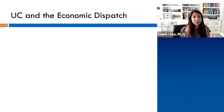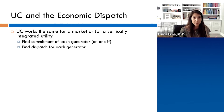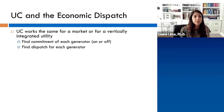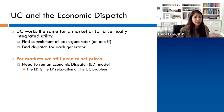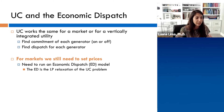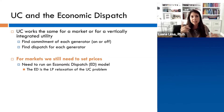Alongside unit commitment, we have what we call economic dispatch. The unit commitment works the same for a market or a vertically integrated utility — it finds whether each generator is on or off, and finds the dispatch for each generator. For markets, since we still need to set prices, we also run the economic dispatch model. The economic dispatch is basically the LP relaxation of the unit commitment problem. The unit commitment problem is a mixed-integer optimization model, because you have integer variables — zero meaning the generator is offline, one meaning it is online.